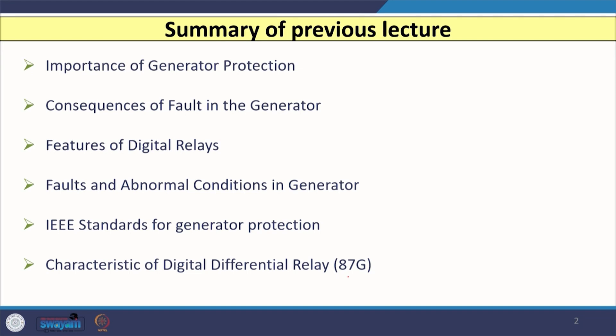We discussed three IEEE standards used by most utilities when designing a protection scheme for a large synchronous generator. We then started our discussion on the differential relay, discussing the two-slope characteristic of the digital differential relay — the 87G unit — and the significance of pickup, slope 1, and slope 2. The differential characteristic is plotted based on restraining current and operating current.